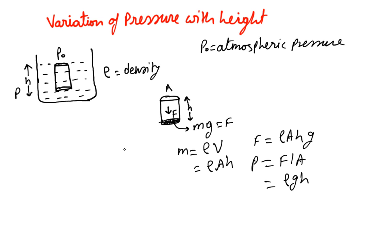The total pressure is going to be P naught—because P naught is acting on top of the surface and will be transmitted downward—plus rho * g * h. So this is the total pressure.